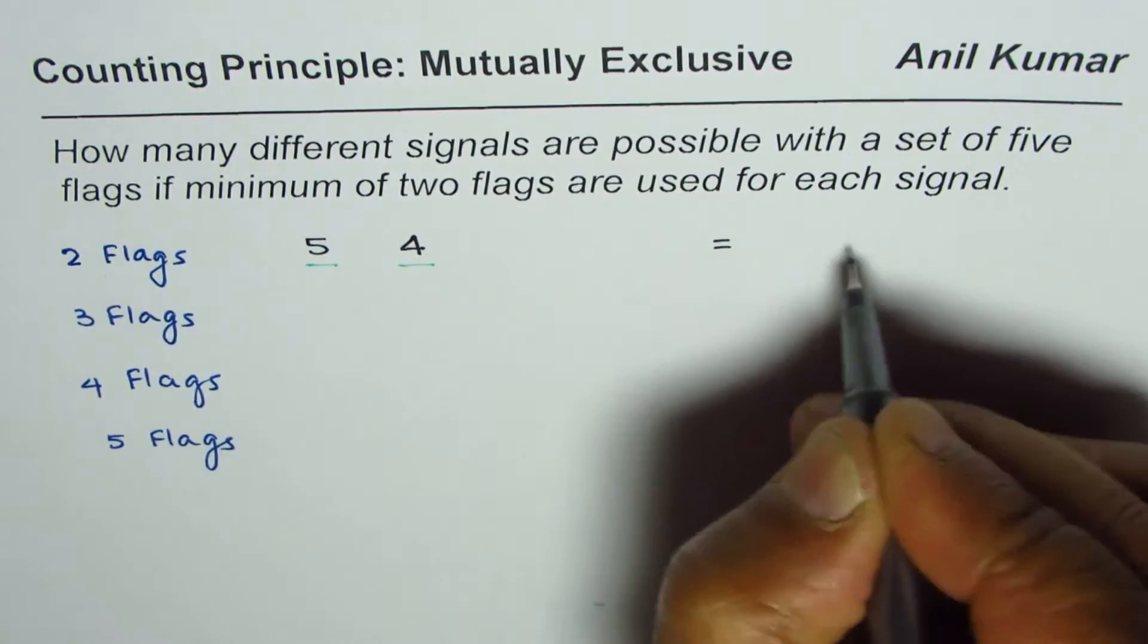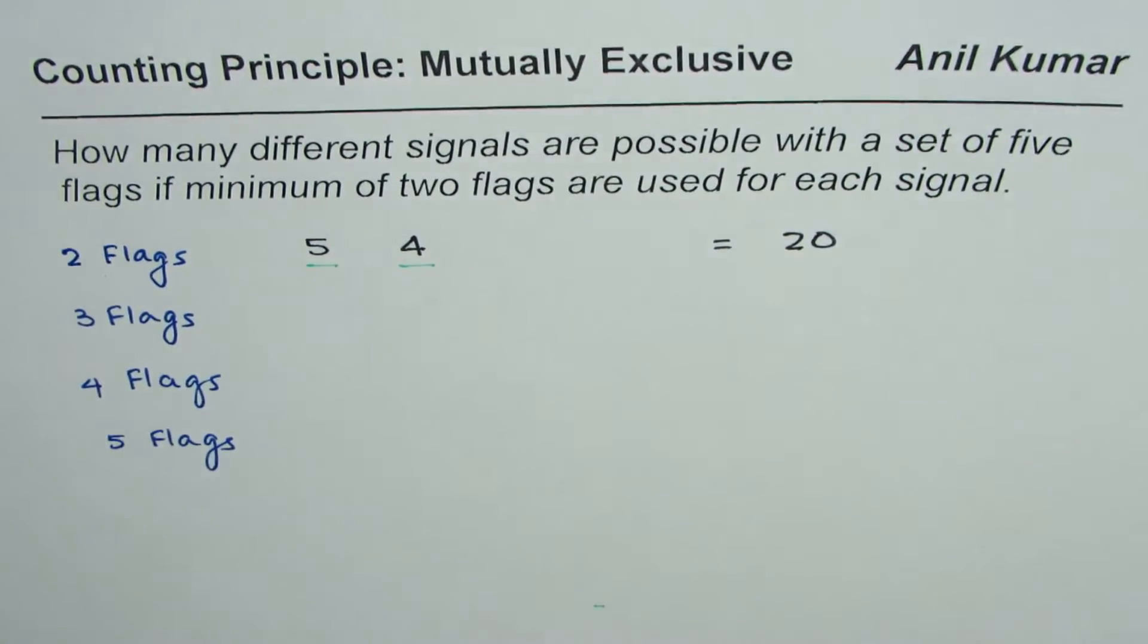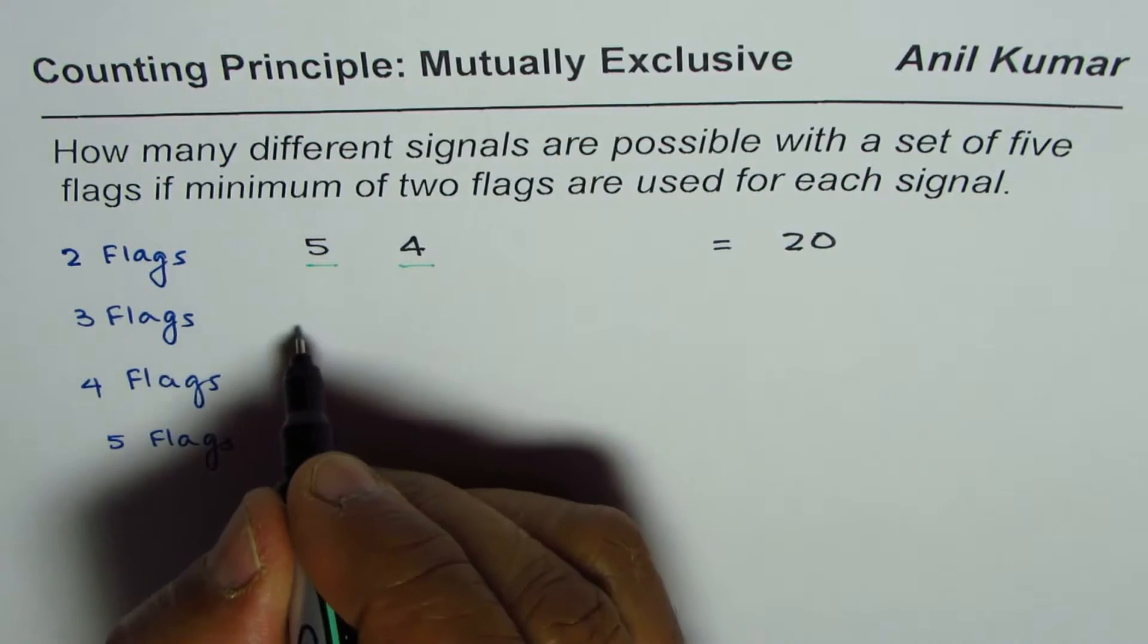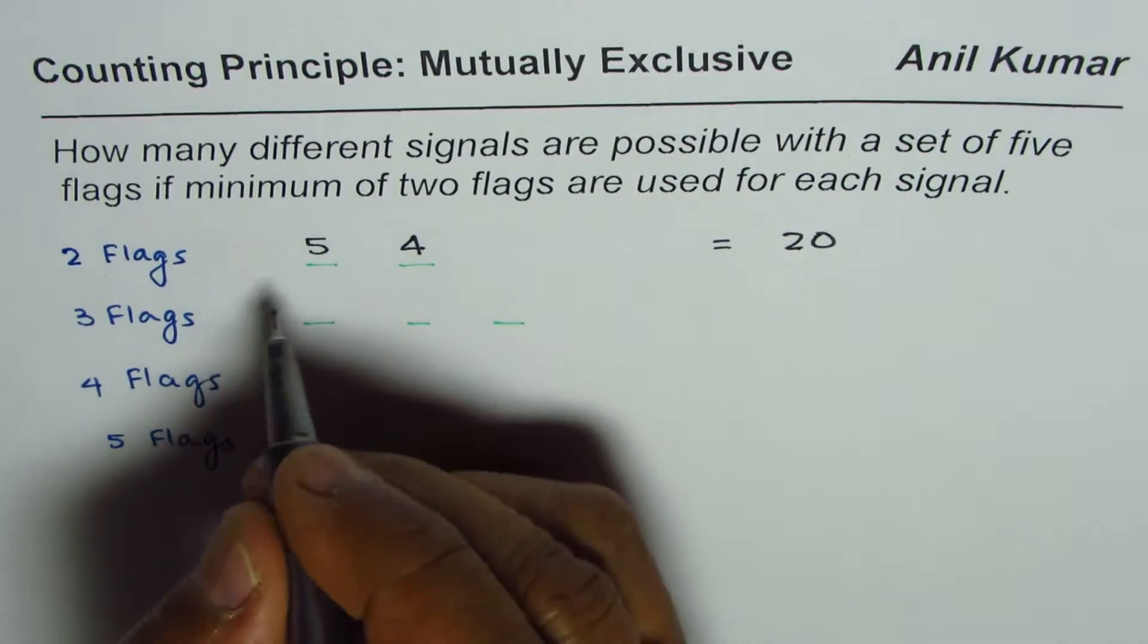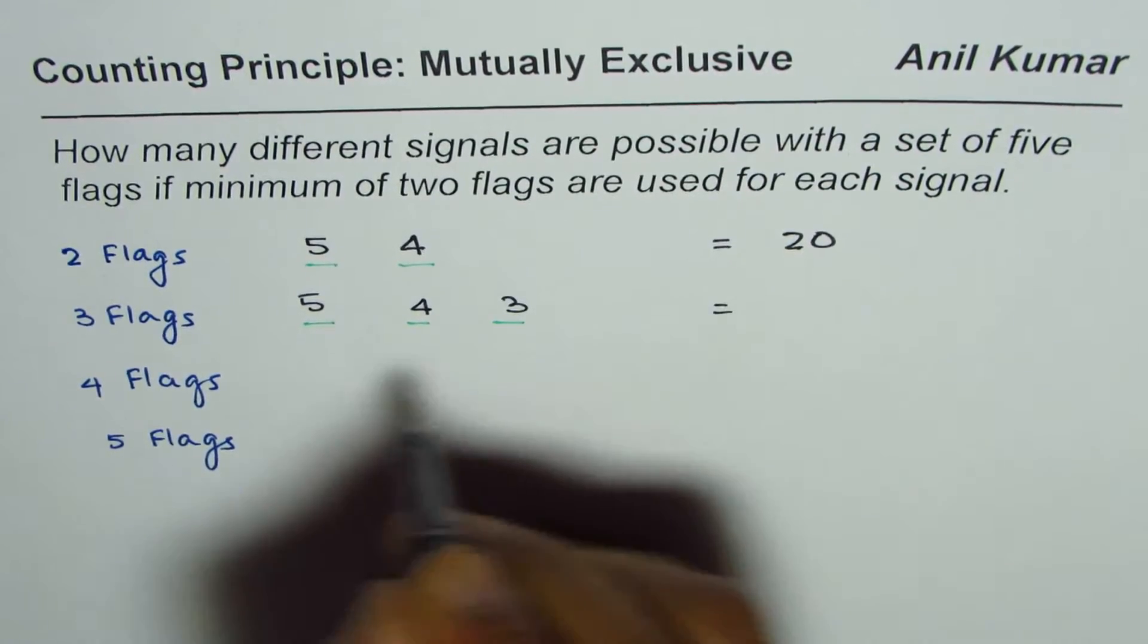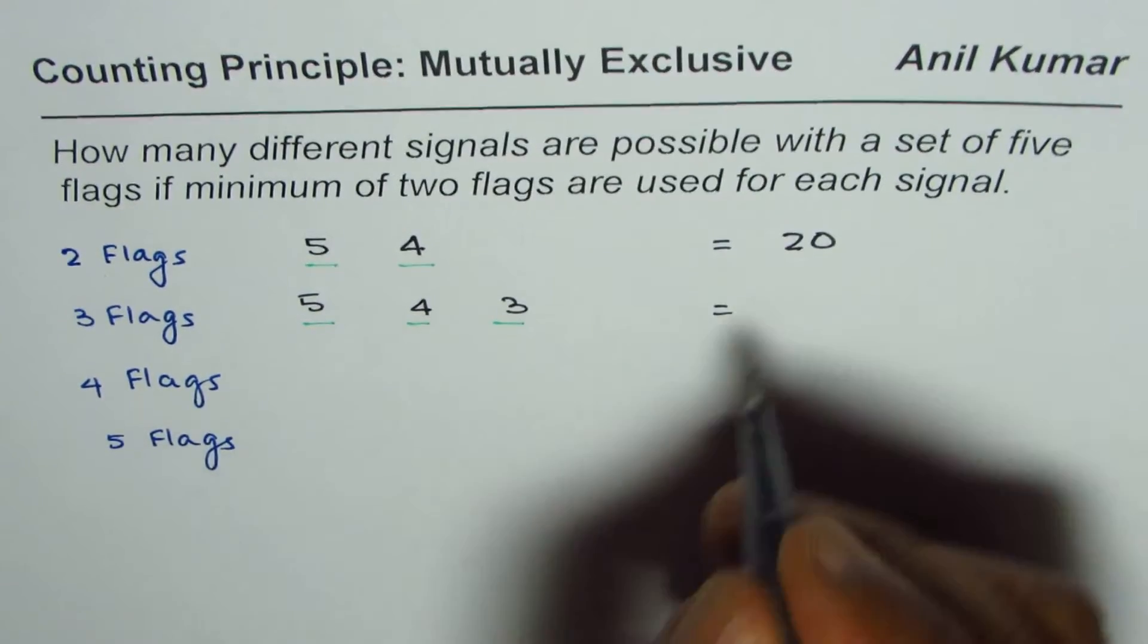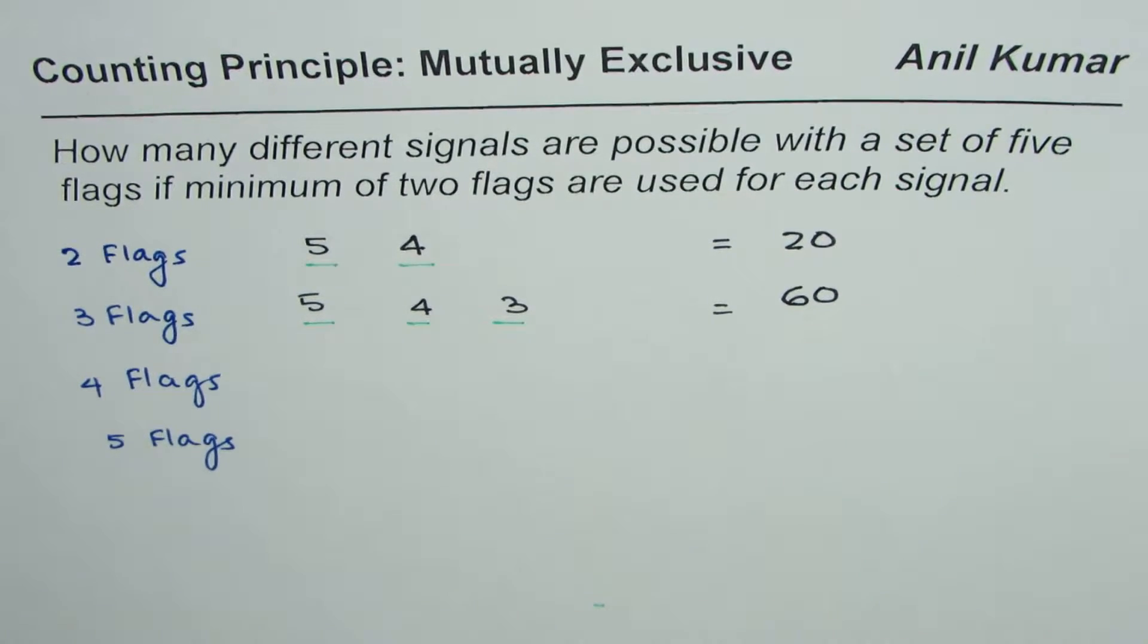Now if you use three flags, in that case the options could be five, four, and three, and that gives you twenty times three as sixty.